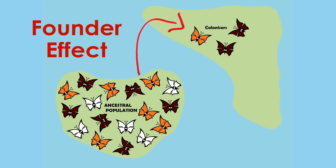Genetic drift may also be caused by founder effects, which are created when new populations are founded by small groups of individuals that may not accurately represent the diversity of their original ancestral population. The ancestral population may change because it has lost individuals, and the new population may differ because it was founded by a non-representative group.